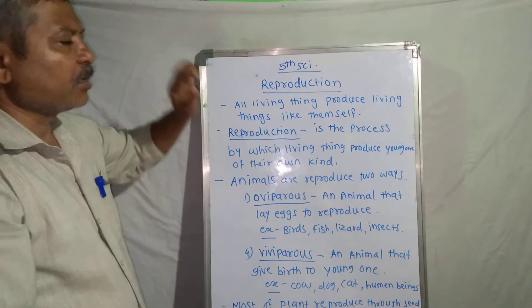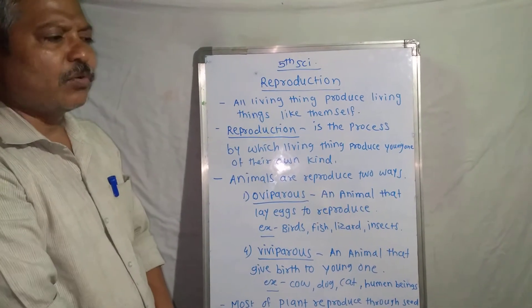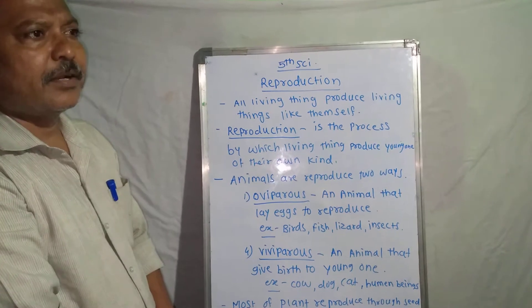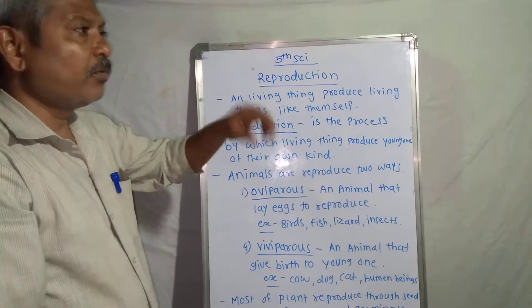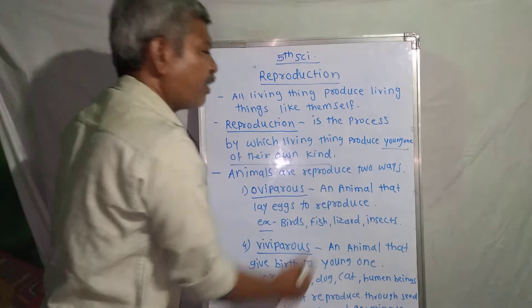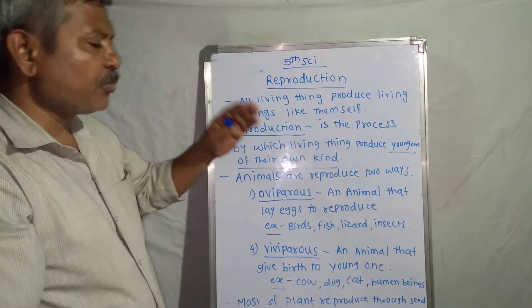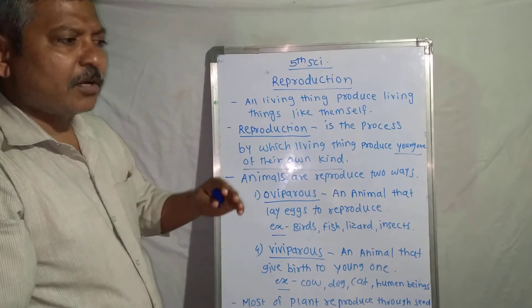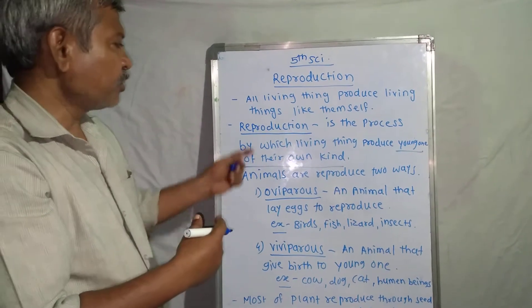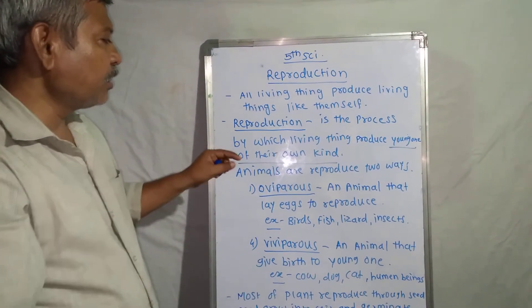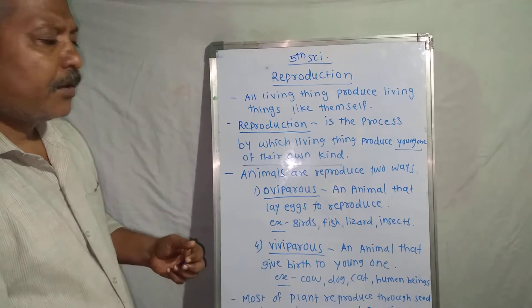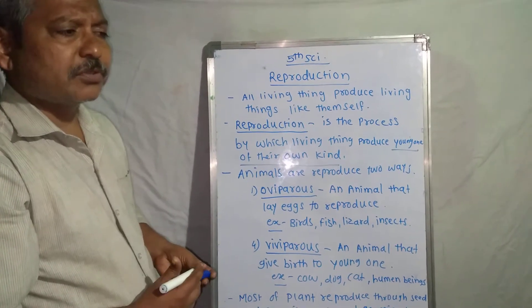That is reproduction — all living things, including plants and animals, produce living things of their own kind. This is the important one. Human beings reproduce and produce human beings; the dog produces puppies, animals like themselves. That's why they are called 'of their own kind' — they produce young ones of their own kind.